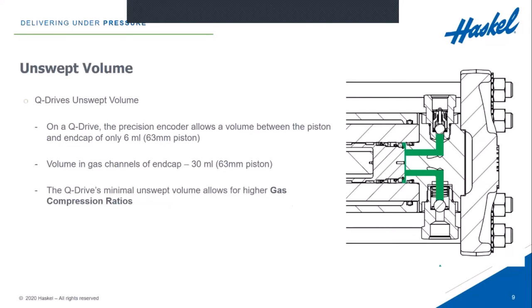In the Q-Drive, a precision encoder very precisely controls the position of the piston. When the Q-Drive starts up and orients itself in the morning when you first power it up, it actually pushes the piston all the way to slightly touch the end cap so the control knows exactly where the piston and the end cap are. While it's actually cycling, it gets very close to the end cap, and on a 63 mm piston there's only six milliliters of unswept volume between the end cap and the end of the piston. The gas channels in the end cap add only 30 milliliters. Because we have such a small unswept volume in the Q-Drive, that allows us to have much higher gas compression ratios than most other boosters or compression systems allow for.